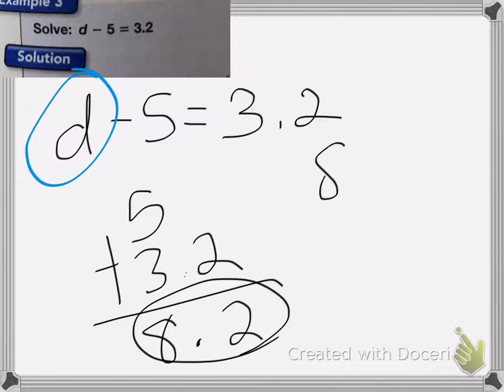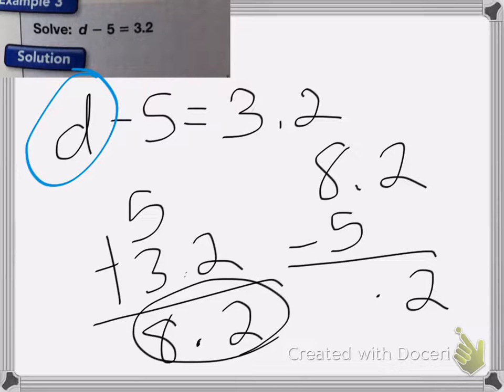Now to double check, we can actually put that into my equation, 8.2 minus 5, and let's see if it equals 3.2. 2 minus nothing is 2, decimal comes down, 8 minus 5 is 3. So 8.2 is the correct answer.